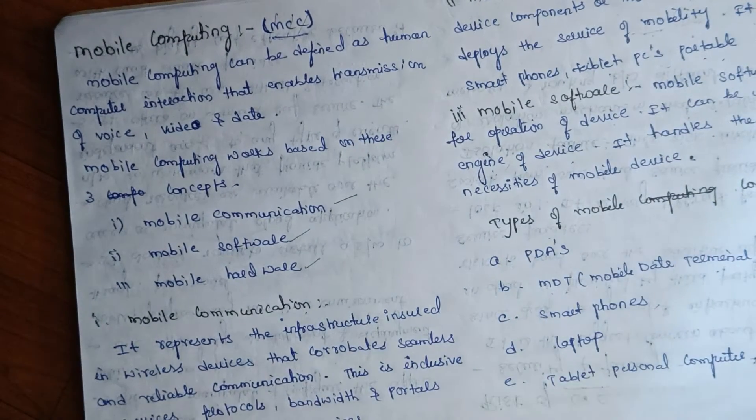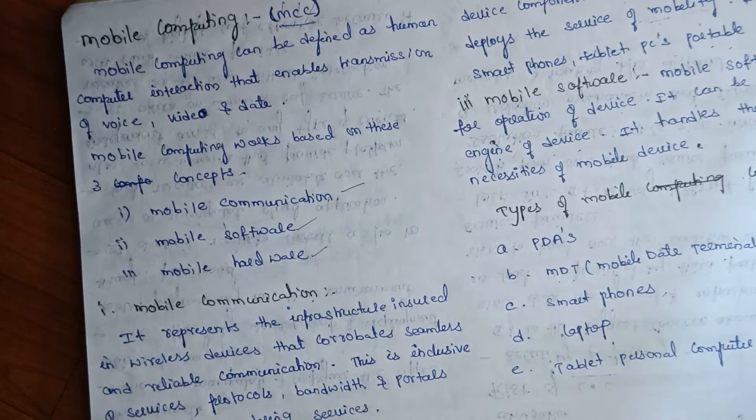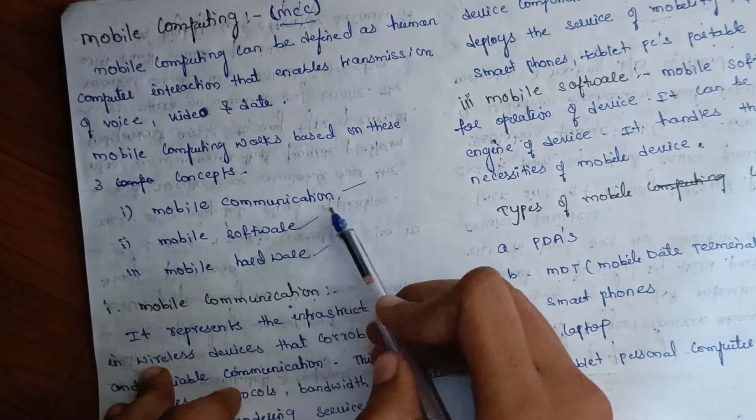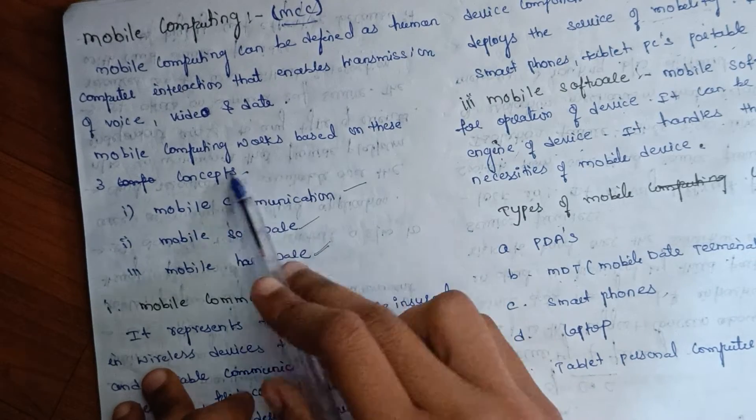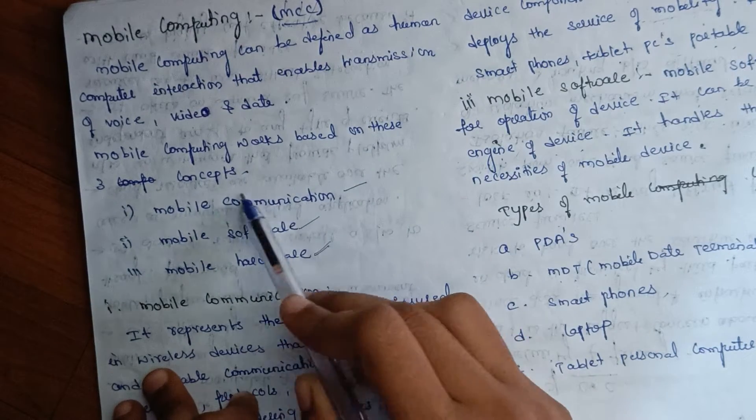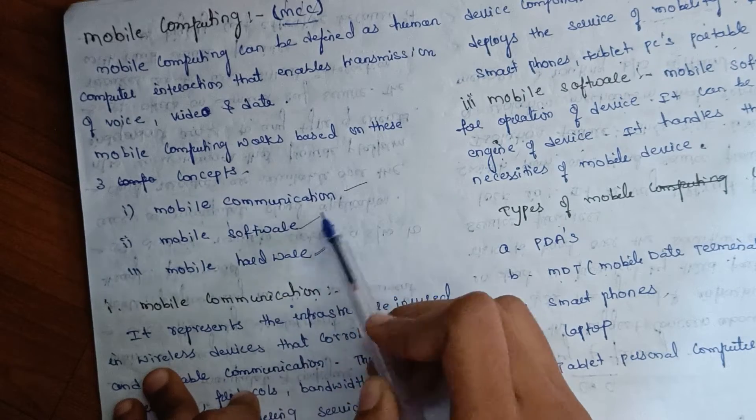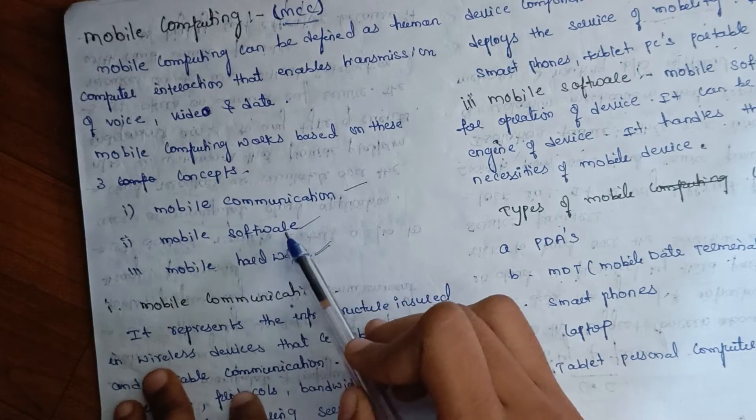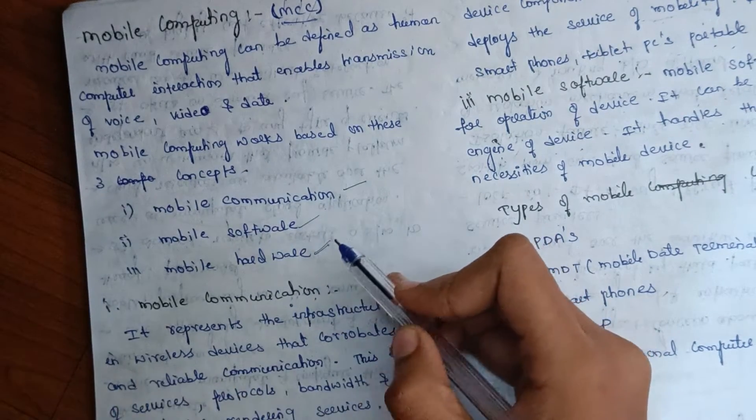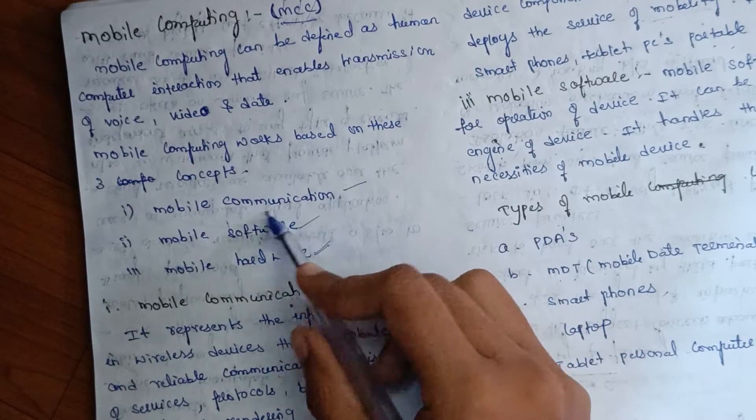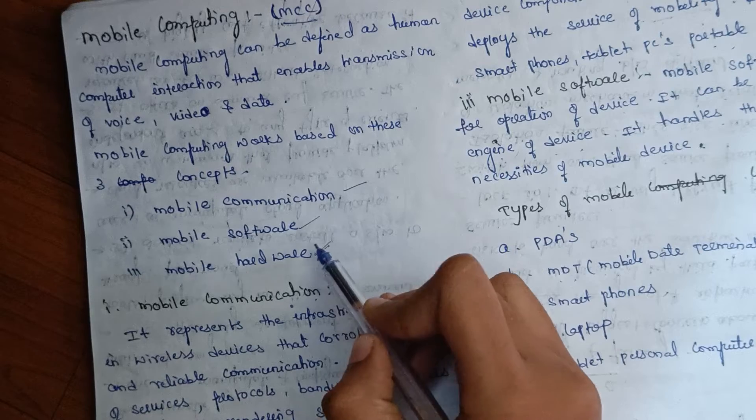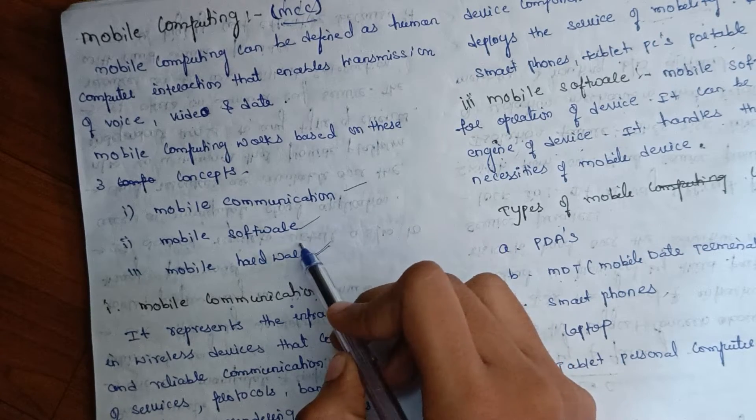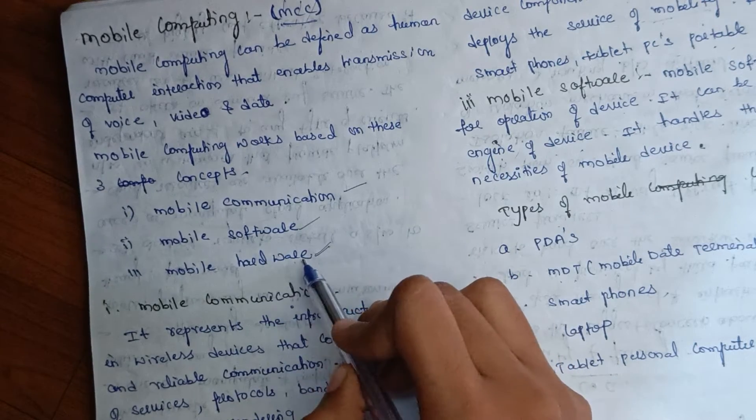We have three concepts in mobile computing: mobile communication, mobile software, and mobile hardware. Mobile communication handles the communication aspect, software provides the functionality, and hardware provides the physical devices and components for service delivery.